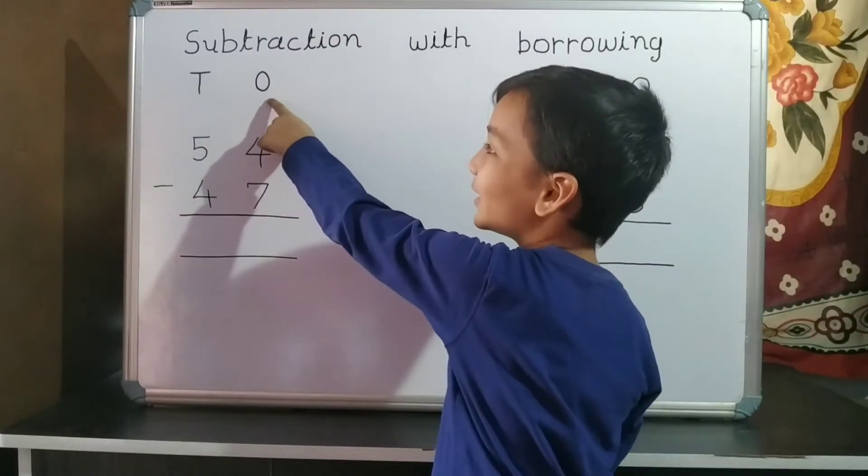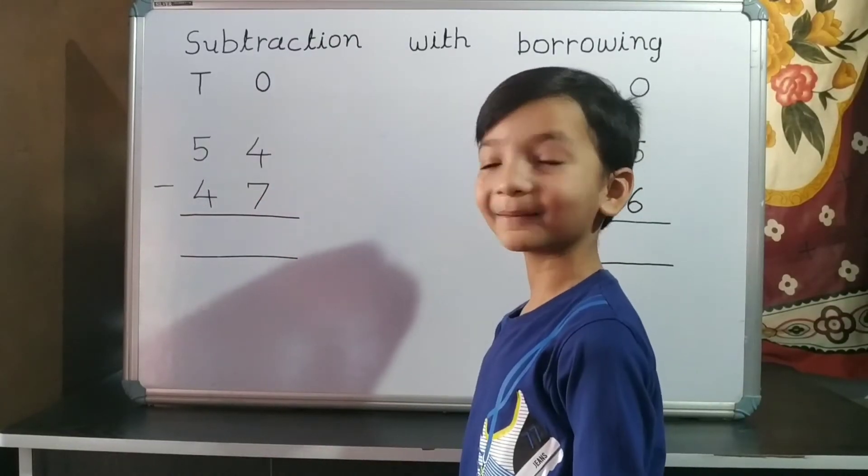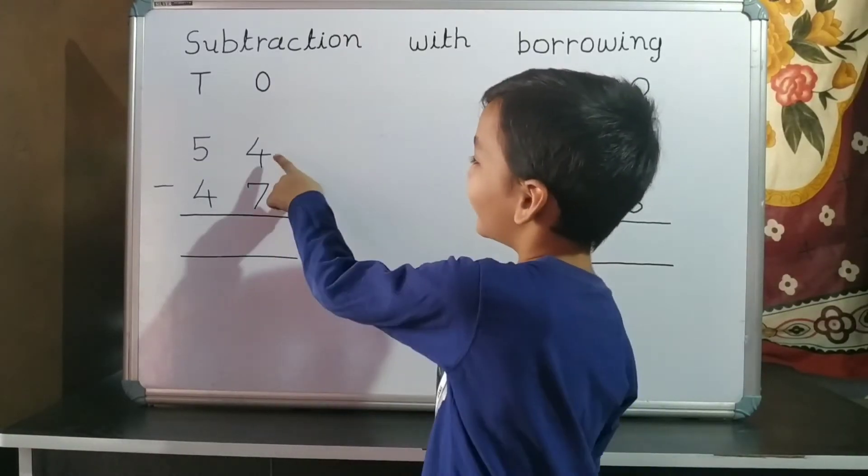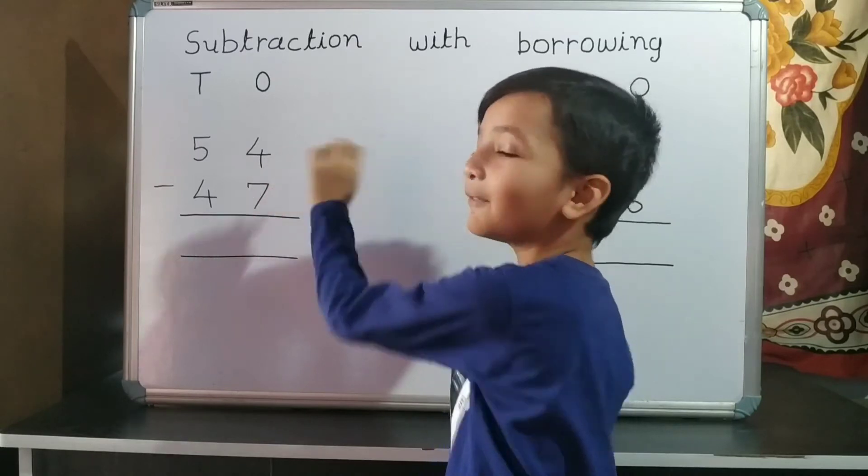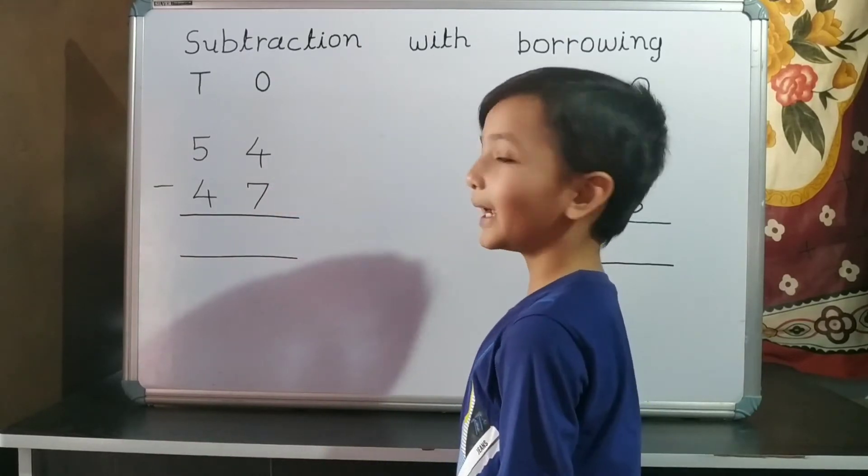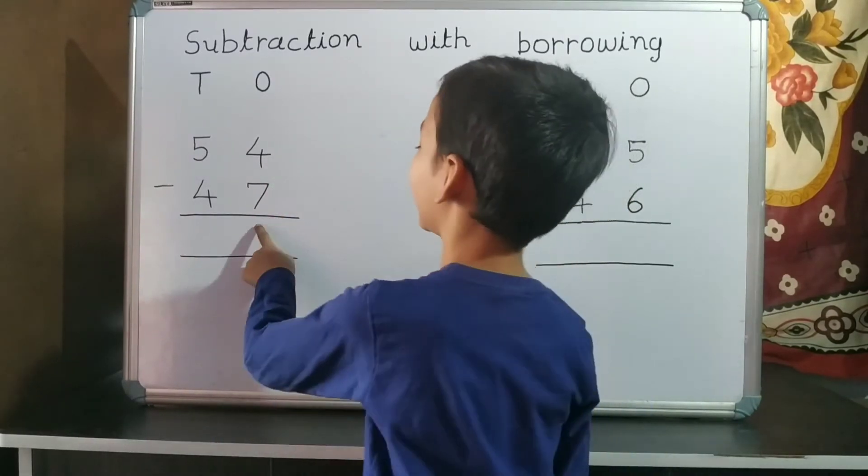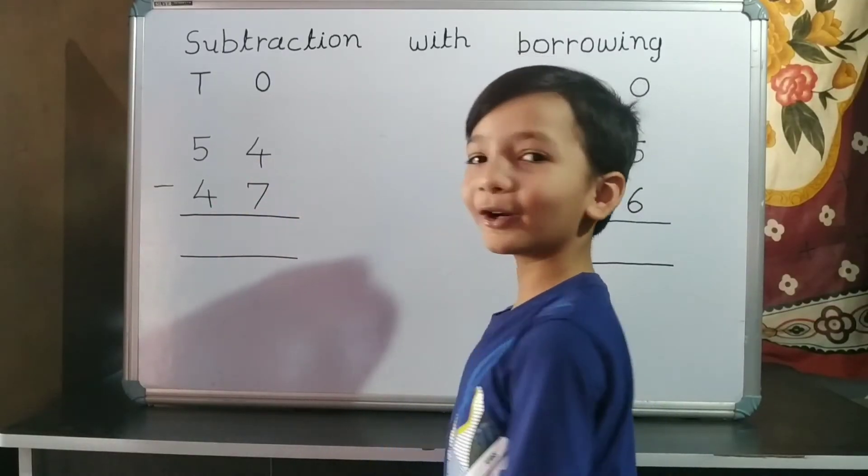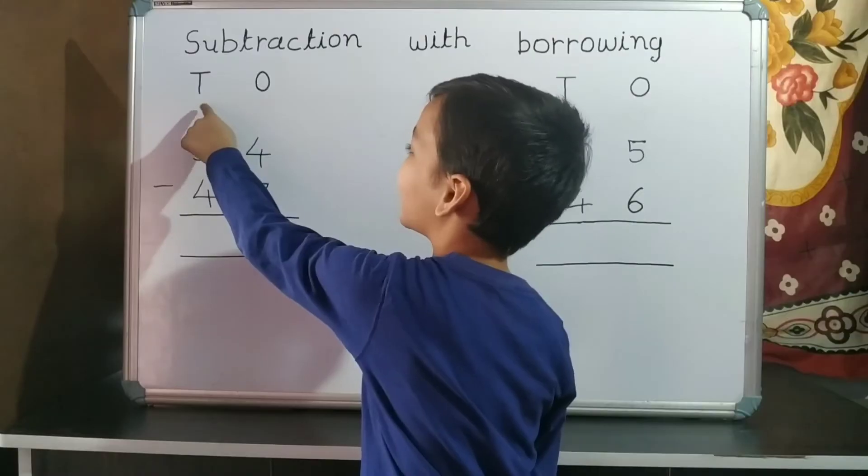Next, we do subtraction of 1's place. 4 minus 7. 4 is smaller than 7, so we cannot subtract 7 from 4. So we borrow 10 from 10's place.